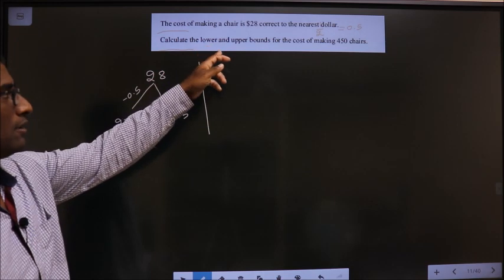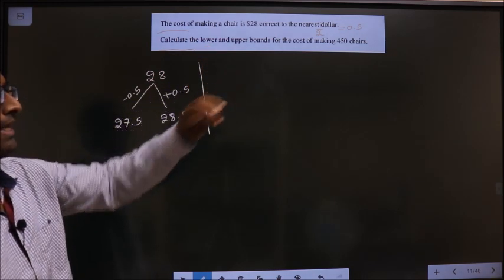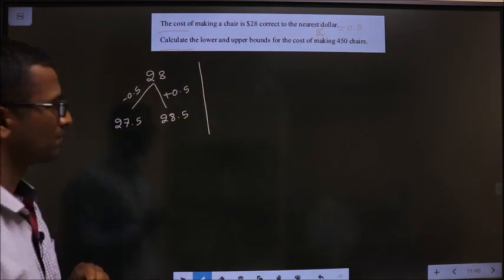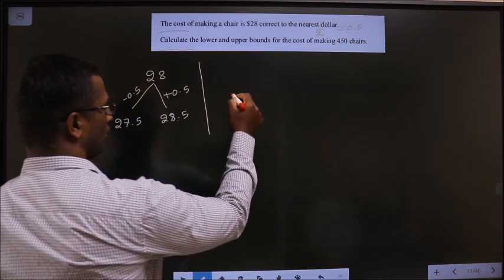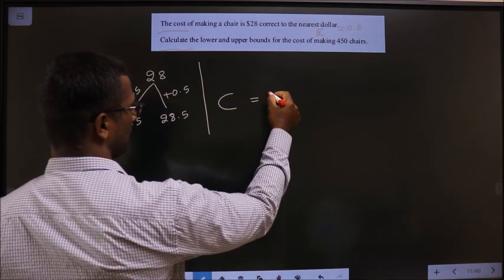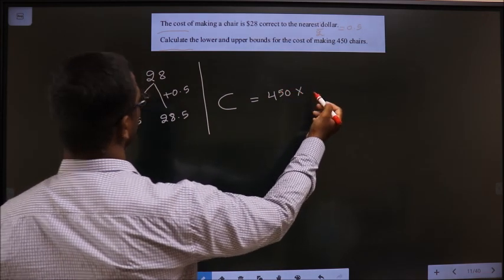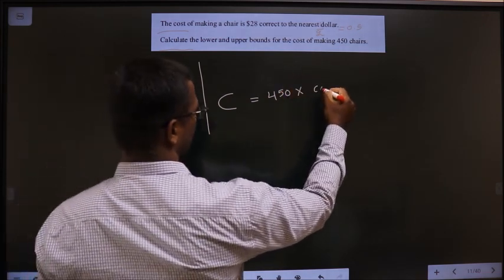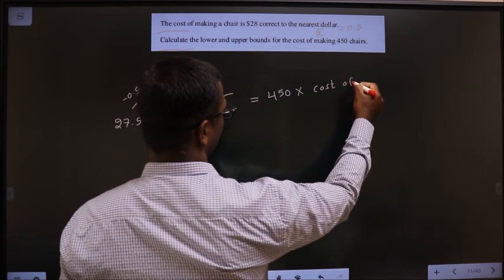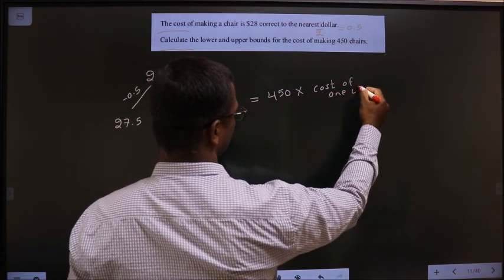Calculate the upper and lower bounds for the cost of making 450 chairs. Cost for making 450 chairs will be nothing but 450 into cost of 1 chair.